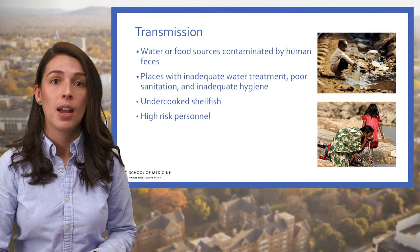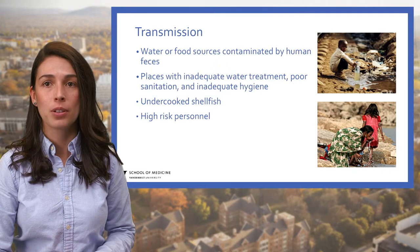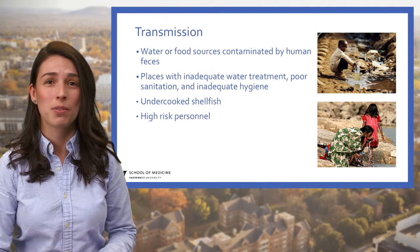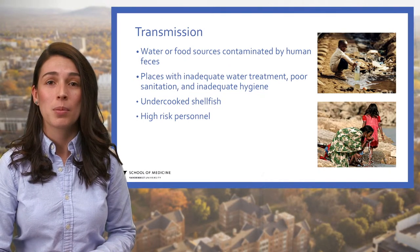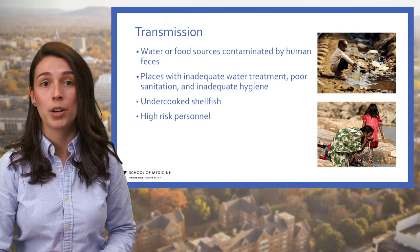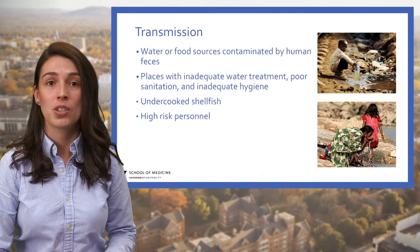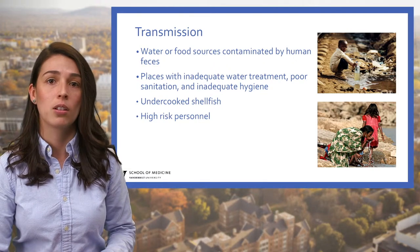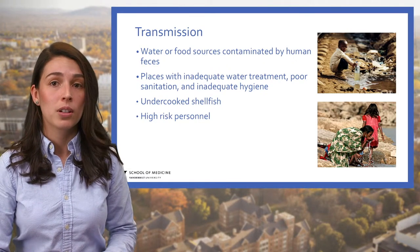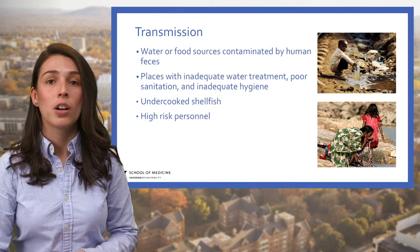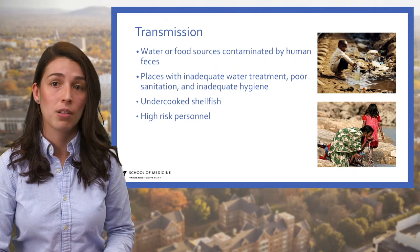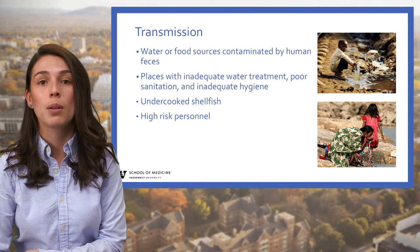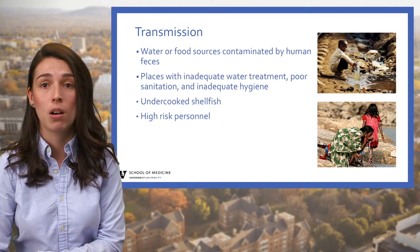A person can get cholera by drinking water or eating food contaminated with the cholera bacterium. Large epidemics are often related to fecal contamination of water supplies or street-vended foods, and are most likely found in places with inadequate water treatment, poor sanitation, and inadequate hygiene. Brackish and marine waters are natural environments for Vibrio cholerae. There are no animal hosts; however, bacteria can attach to the shells of crabs, shrimps, and other shellfish, which can be a source of human infection when eaten raw or undercooked.